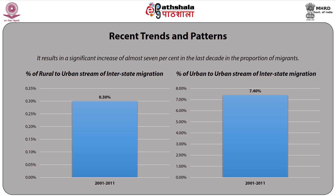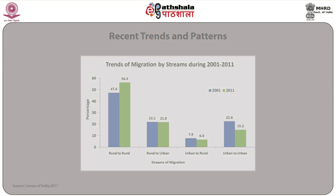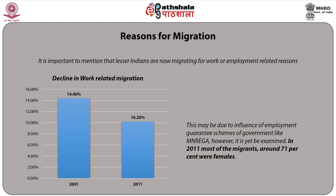Additionally, there was marginal growth in rural-to-urban migration streams of around 0.3 percent and growth of 7.4 percent in the urban-to-urban stream of interstate migration during 2001 to 2011, as shown in the figure. Regions of migration are a very important part of the patterns. Notably, fewer Indians are now migrating for work or employment-related reasons — 10.2 percent as per census 2011 — a steep decline from the previous decade's figure of 14.4 percent.